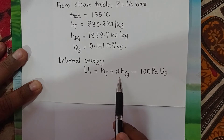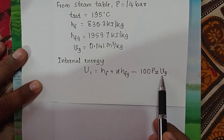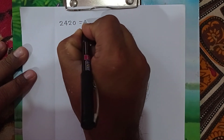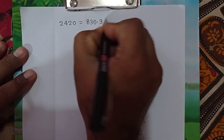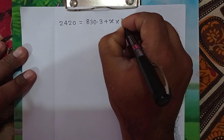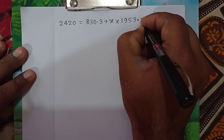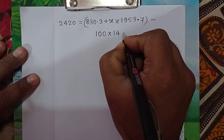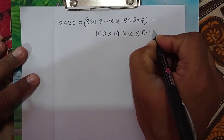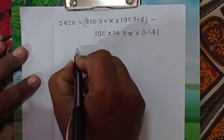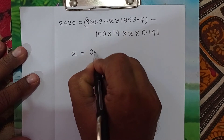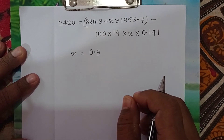Substituting into U1 = Hf + X·Hfg − 100·P·X·Vg: 2420 = 830.3 + X × 1959.7 − 100 × 14 × X × 0.141. Solving for X, we get the dryness fraction X = 0.9. This is the answer to the first part of the problem.